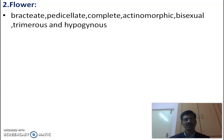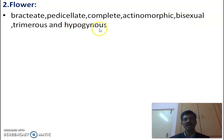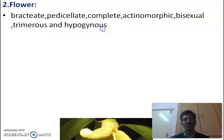The characters of the flower: bracteate — bracts are present; pedicillate and complete — all floral parts are present; actinomorphic, meaning it is a symmetrical flower; bisexual — both androecium and gynoecium are present; trimerous; and hypogynous, meaning the ovary is superior.